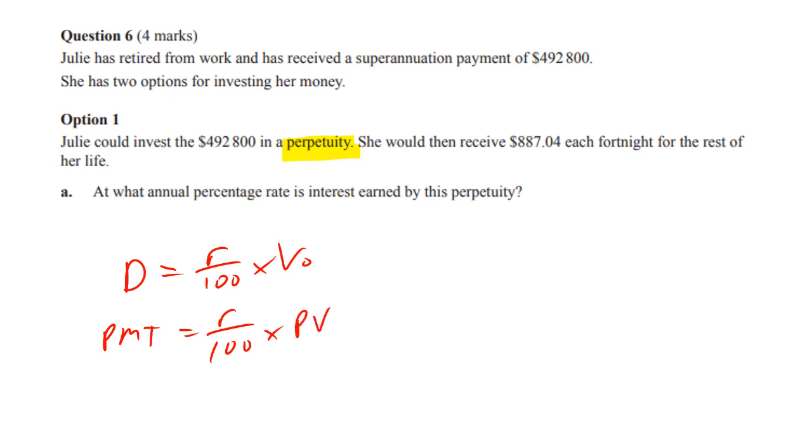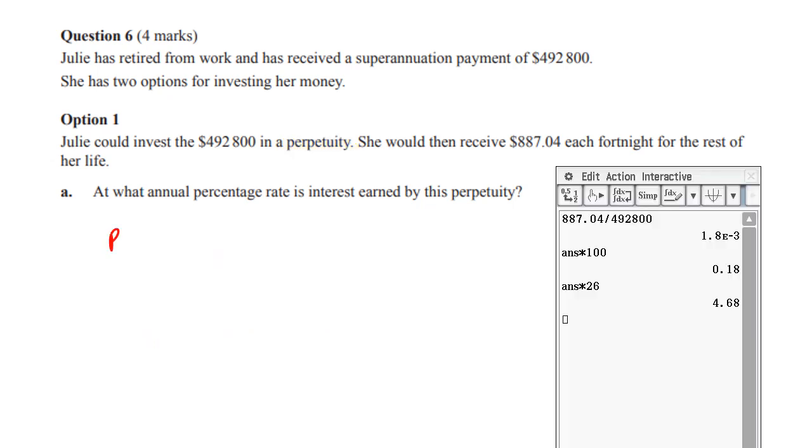So if you just hit your calculator in the main section you can do this quite easily. So rearranging that formula if we take the payment and we divide by the present value and then we times by 100 because we want to make percent and then we times by 26.